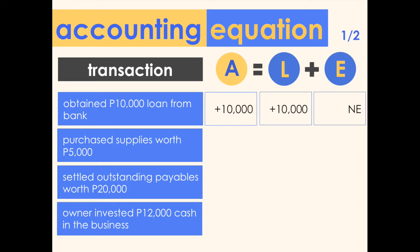Transaction two: purchased supplies worth 5,000 pesos — received supplies and paid cash. Both are assets. There is an increase in assets because of supplies received, but there is also a decrease in assets because of the cash payment. The net effect on assets is actually zero. So the impact of this transaction is no effect on all three elements — both sides of the equation are equal.